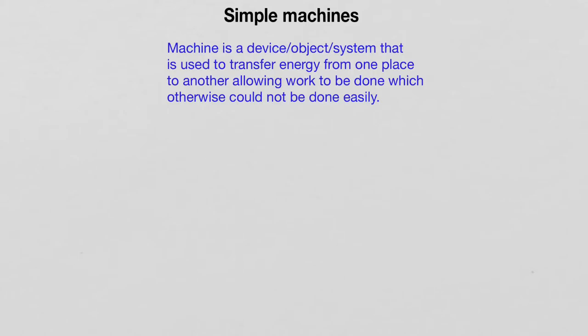In this lecture, I will discuss the several different types of simple machines and the mechanical advantage that simple machines provide to us. First, let's define what a machine is. A machine is a device, or an object, or a system that is used to transfer energy from one place to another, allowing work to be done which otherwise could not be done easily. In general, machines multiply the force or effort exerted by an operator to allow for work to be done.